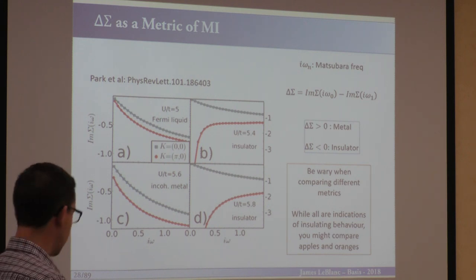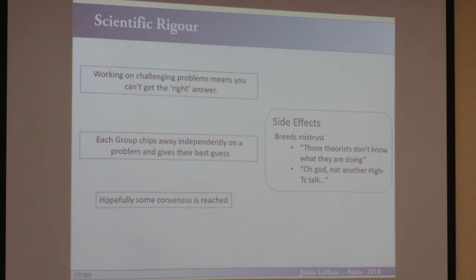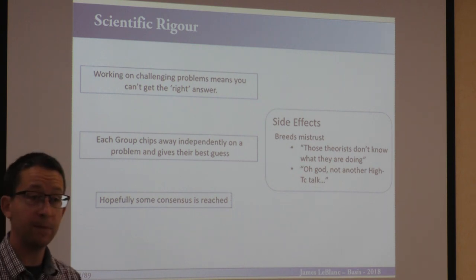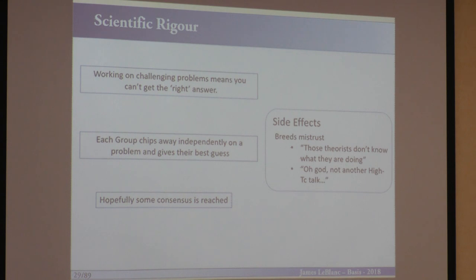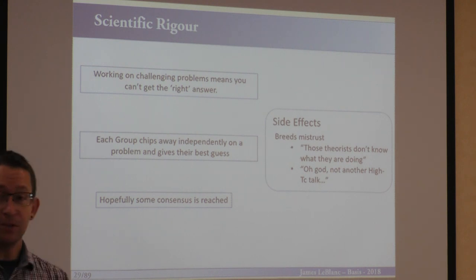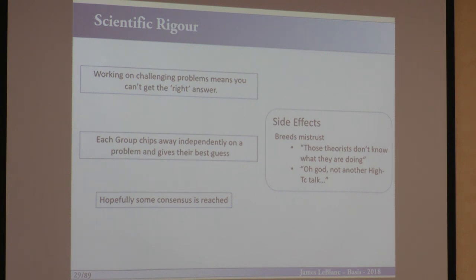You might actually see a different transition when comparing metrics, and this is where we get into some issues in condensed matter physics. When you consider the level of rigor in high-energy physics experiments — the number of cross-checks and the amount of statistics gathered — and compare that to some things done in condensed matter physics, condensed matter often comes up a little bit lacking in rigor, error bars, and reproducibility. You can find in the literature two DFT calculations both using Quantum ESPRESSO with the same mesh and same pseudo-potential, and their graphs are visibly different. Working on challenging problems in small groups means you can't always get the right answer — you're going to have some approximation going on.